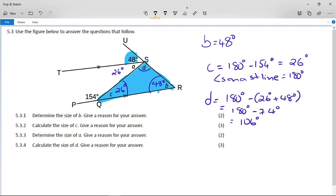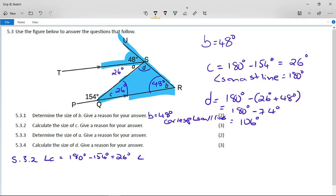So let's have a look at the questions here. Determine the size of angle B. Give a reason for your answer. Remember I said to you right at the beginning, there were these F angles over here. So angle B equals 48 degrees, because they are corresponding angles on parallel lines. Calculate the size of angle C. Give a reason for your answer. So angle C equals 180 degrees minus 154 degrees, which is 26 degrees. And the reason is angles on a straight line are supplementary because that is the other nice word for adding up to 180.